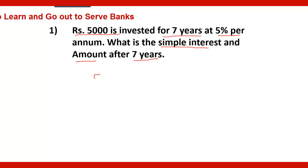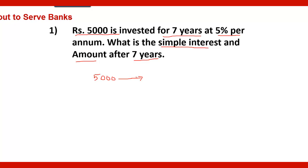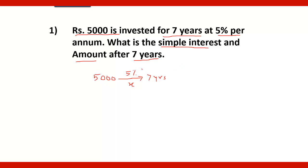Rs.5000 is invested for 7 years at 5% per annum, and we have to find the simple interest. In simple interest, the investor gets 5% for the first year, 5% for the second year, 5% for the third year, and so on up to seven years. It means in seven years, he gets 35% in total.